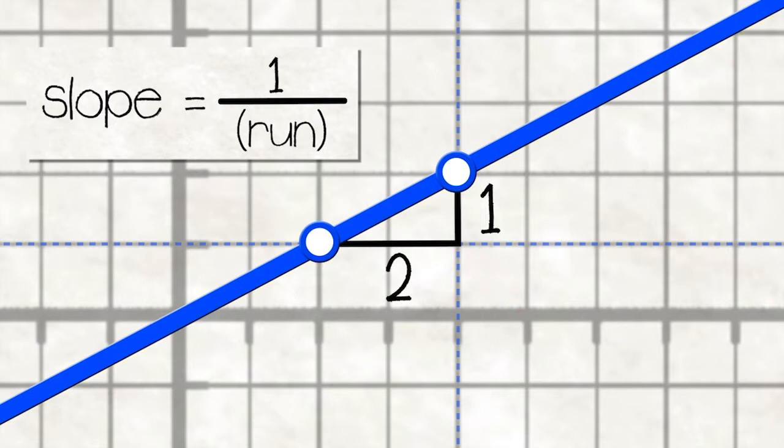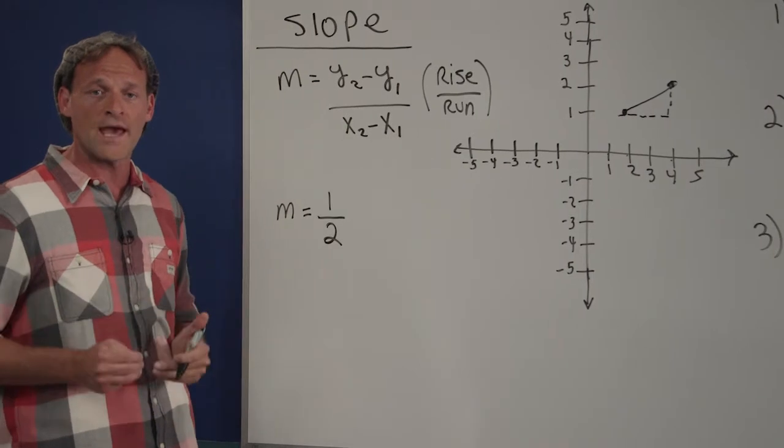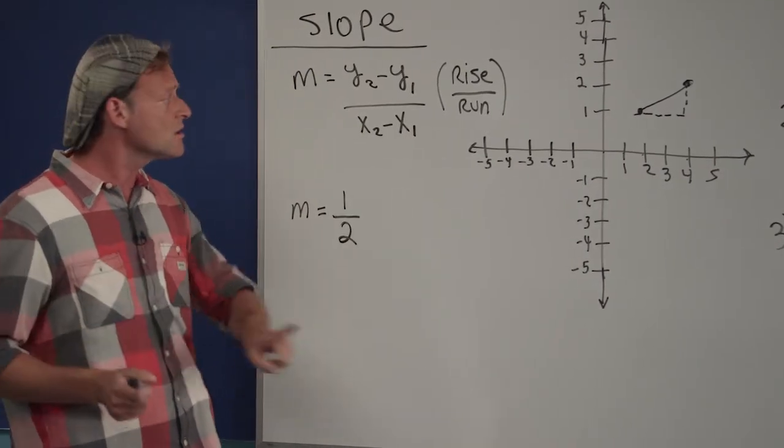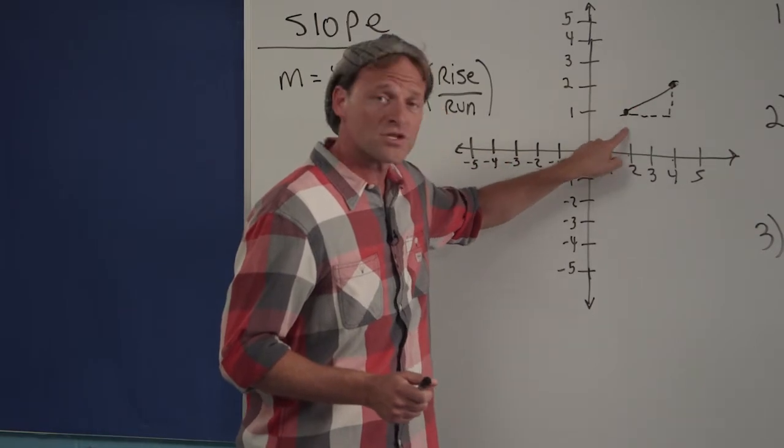That means two goes in the denominator. So our slope is called one half, one over two, which means for every one unit you go up, you go across two units.